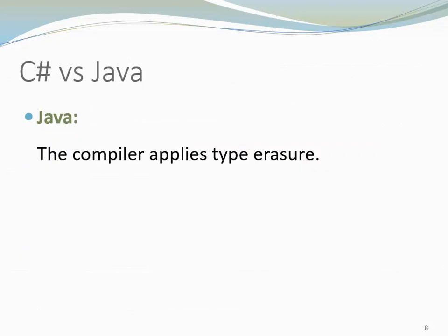Before we look at the namespace System.Collections.Generic, let's take a moment to compare generics in C# with Java. In Java, the compiler applies type erasure. This means that type parameters are substituted with their specified bounds or with class object, and casts are inserted whenever needed.